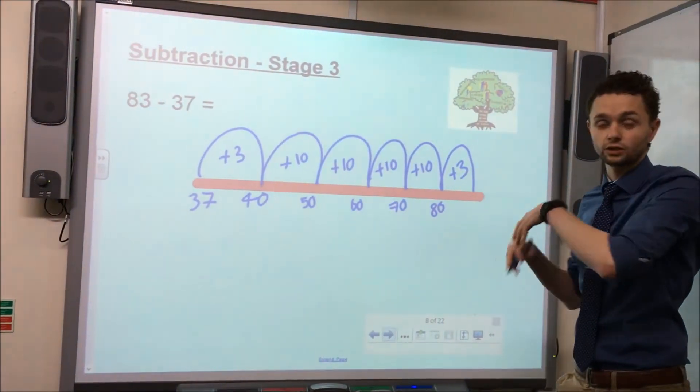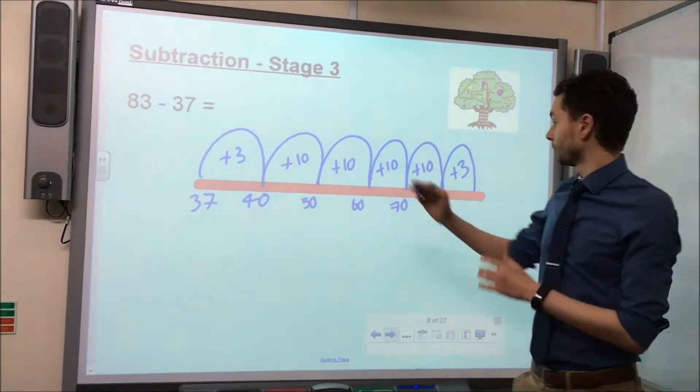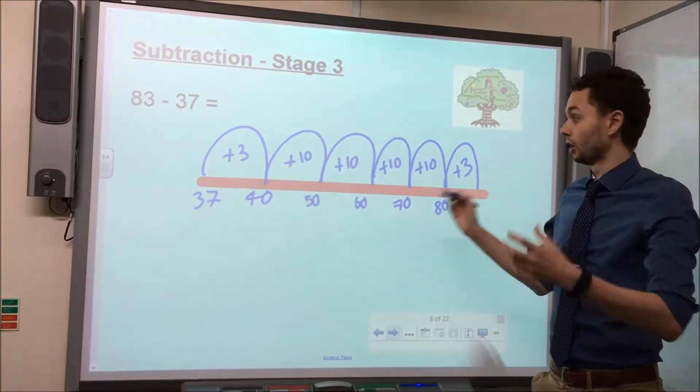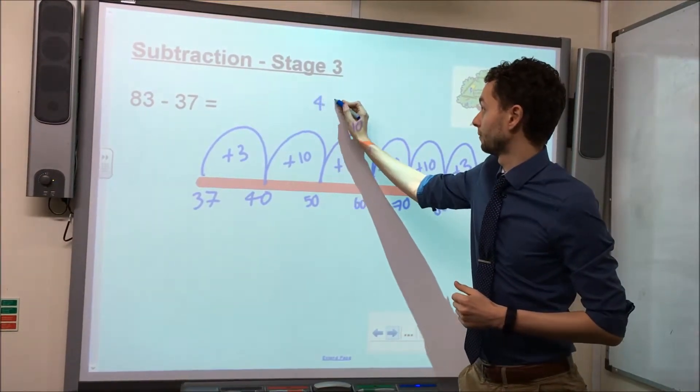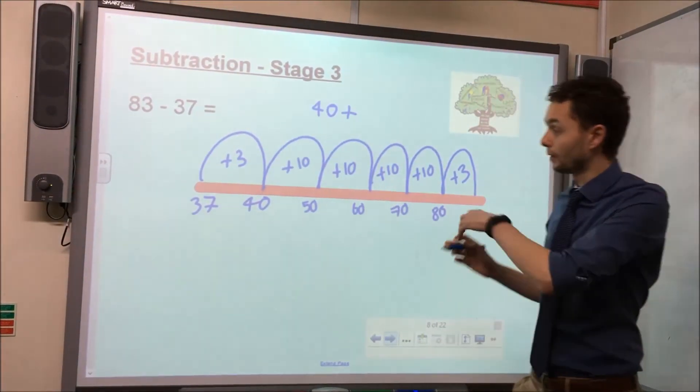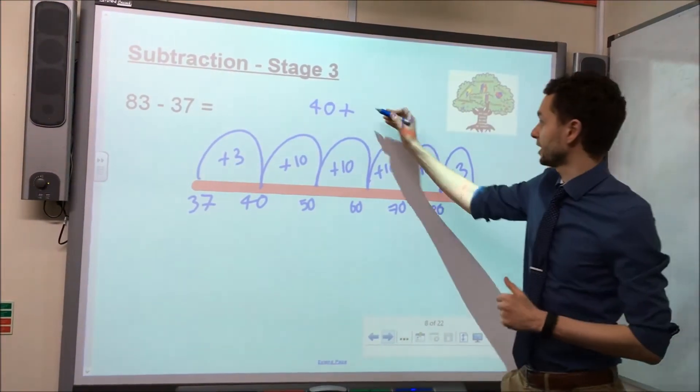Now we've taken the jumps, it's all about working out the answer. We can see here we've taken 4 jumps of 10, and we should know that 4 lots of 10 are 40. And then we've also got 2 jumps of 3, which gives us 6.